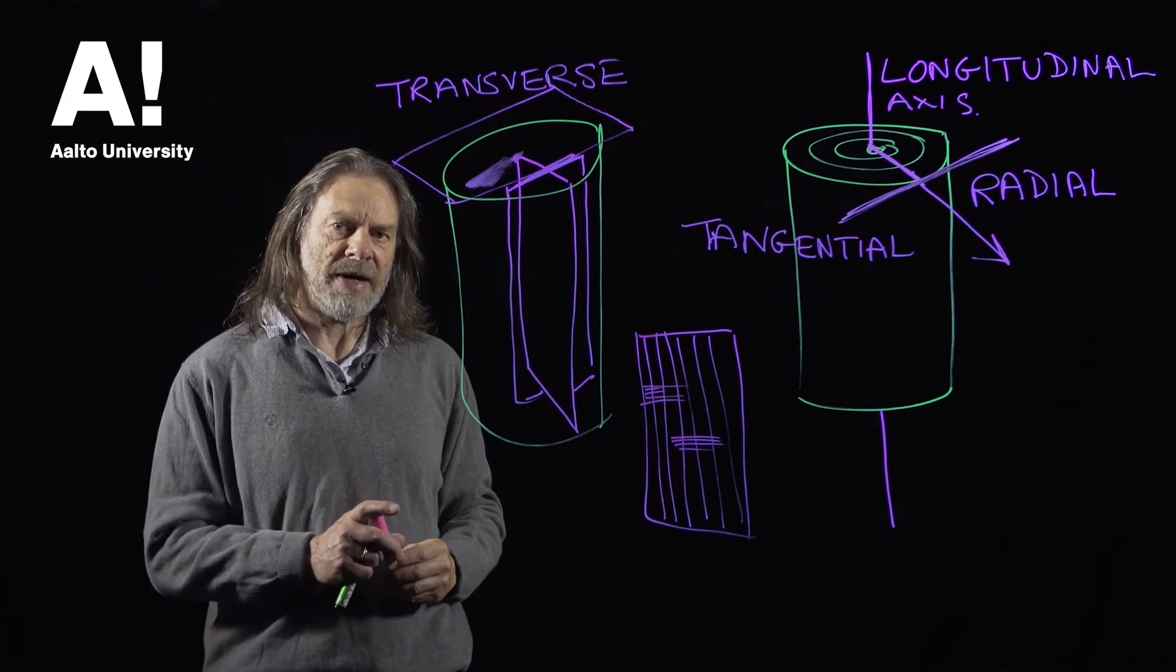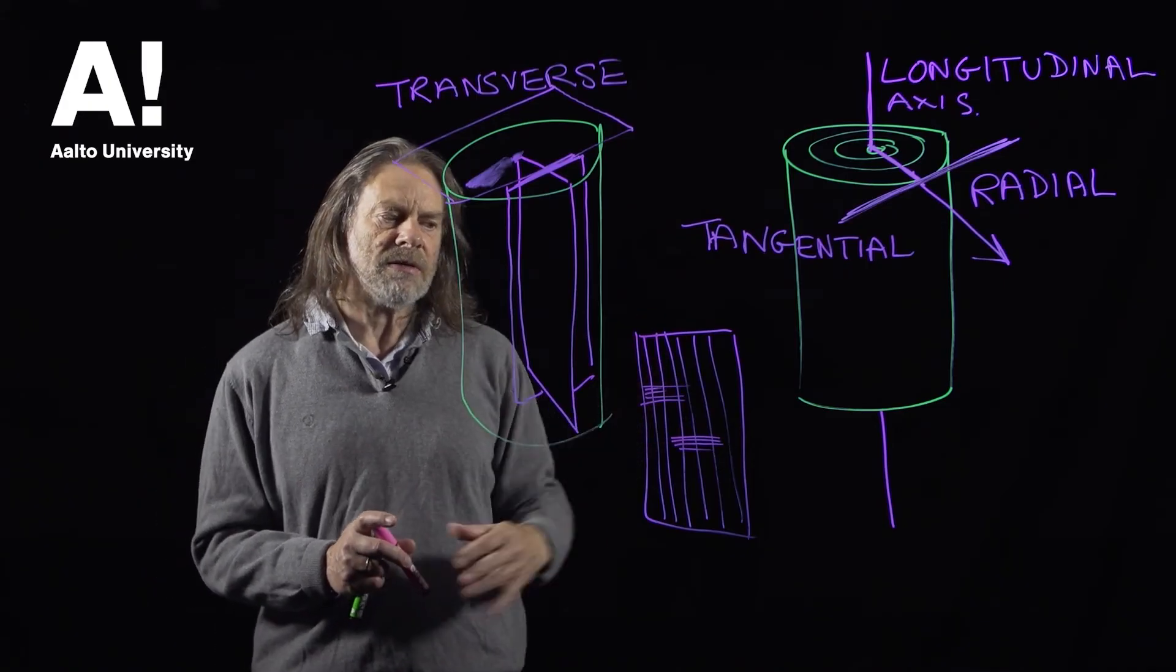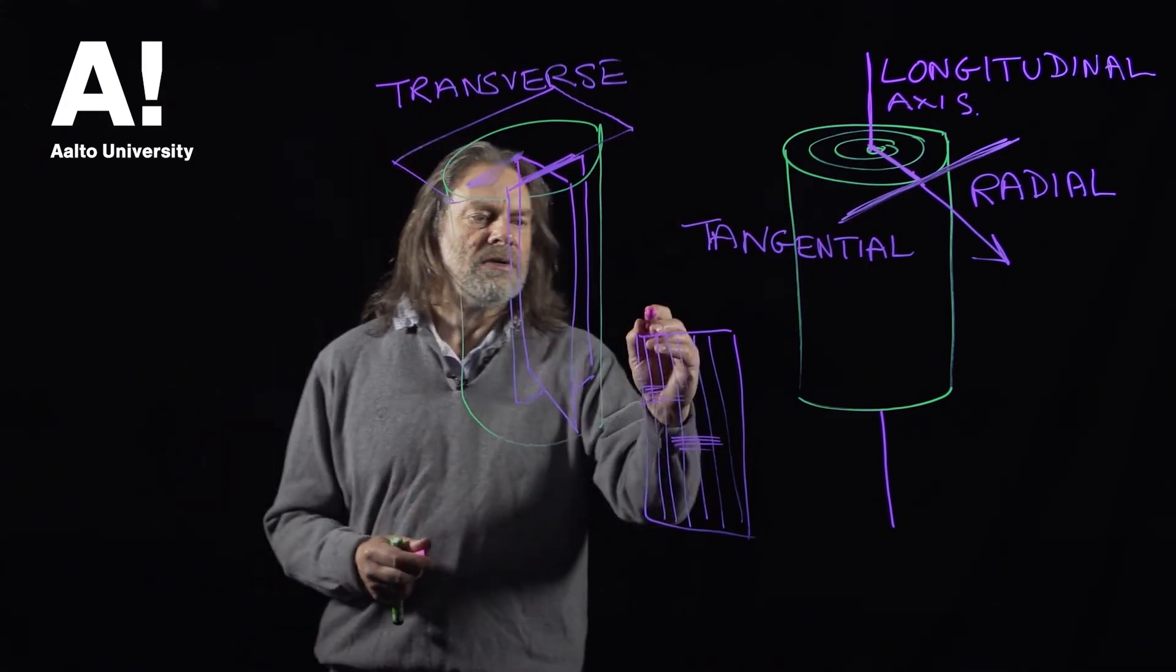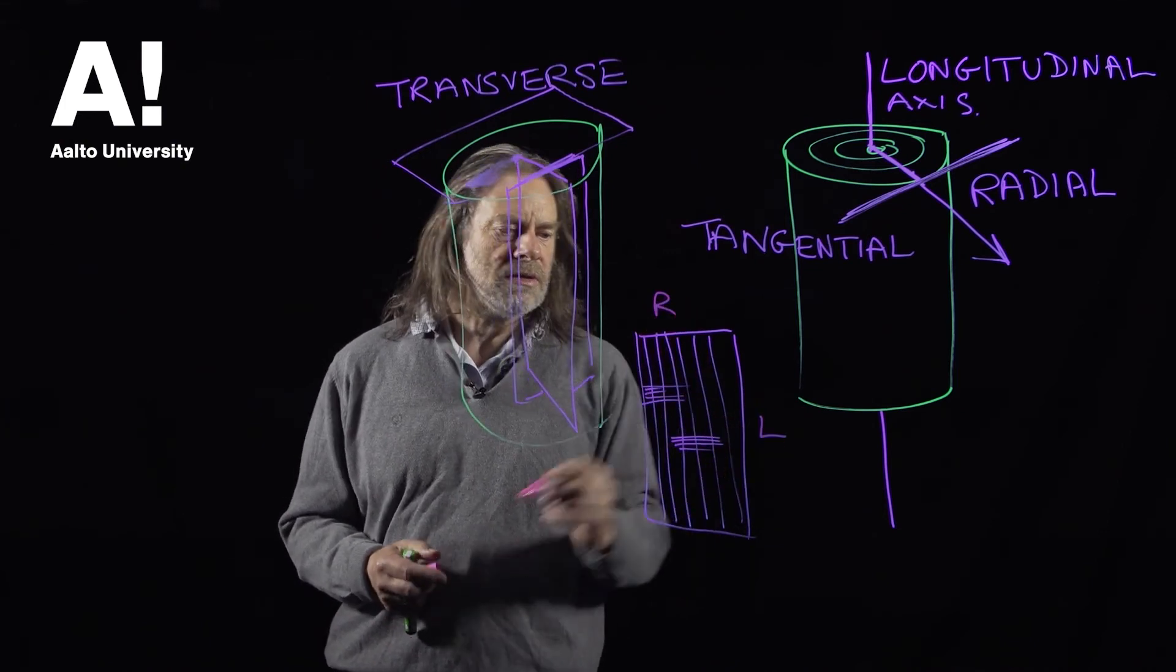So something like this where you just see what are called ray flecks, not much in the way of patterning, that would be typical of a softwood. So that is the radial longitudinal plane.